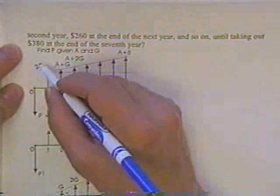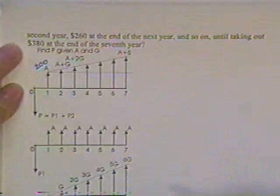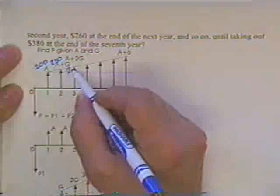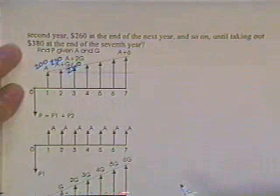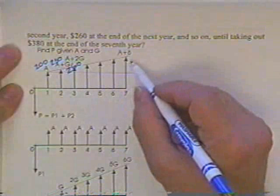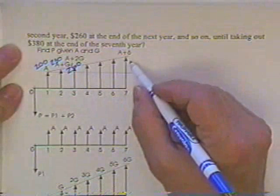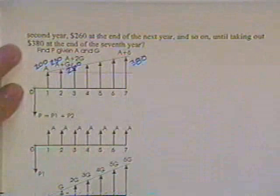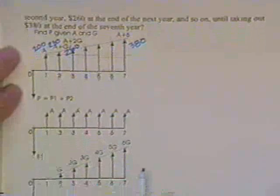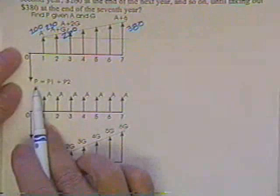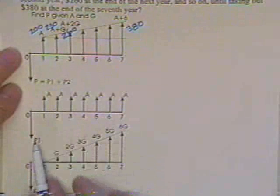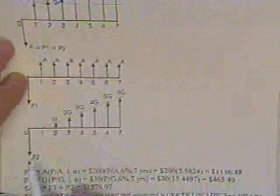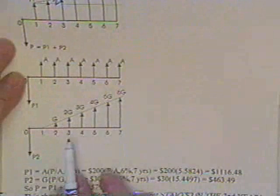So here are our annuities. You'd like to withdraw $200, then $230, then $260, and so on. And finally, at the end of the seventh year, you'd like to be able to withdraw $380. Straight line. Now, what you can do is you just say, the amount necessary is a P1 and a P2.